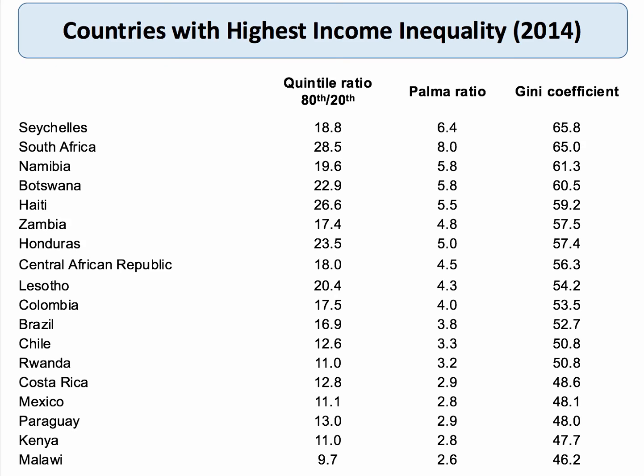This data is for 2014, pretty much the latest data available writing at the end of 2016. These are the countries in the world with the highest income inequality. The highest Gini coefficient is the Seychelles at 65.8, but the highest income inequality by the quintile measure goes to South Africa, where the income of the top fifth is nearly 30 times higher than the average income of the bottom fifth. Countries like Haiti and Honduras also have incredibly high levels according to that measure.